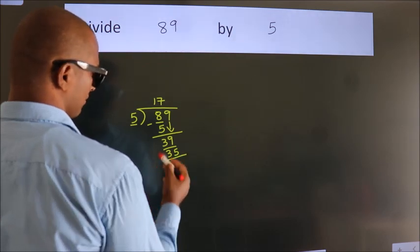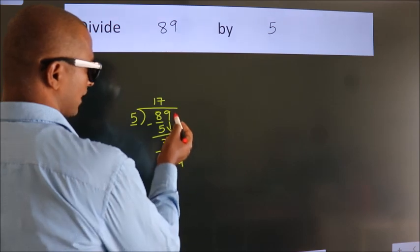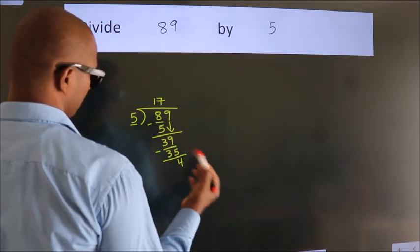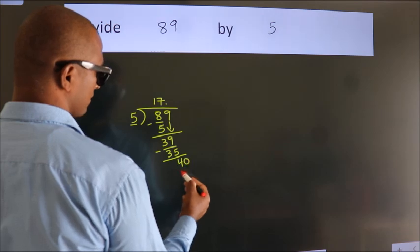Now we subtract. We get 4. After this, no more numbers to bring it down. So what we do is, we put dot take 0. So 40.